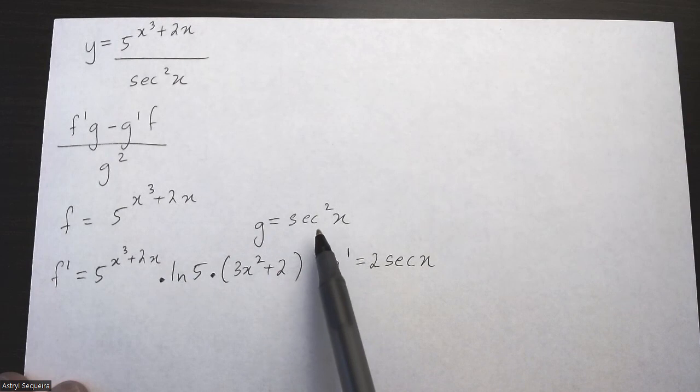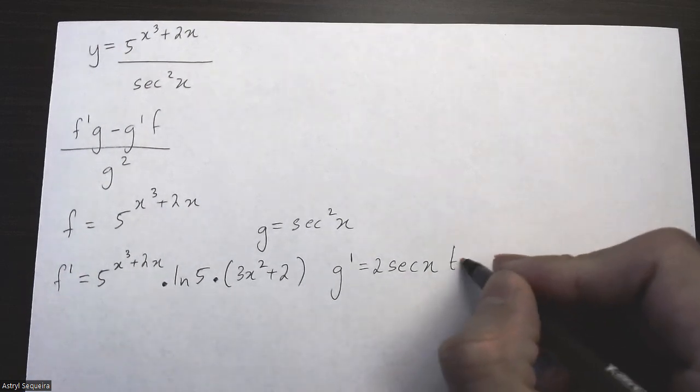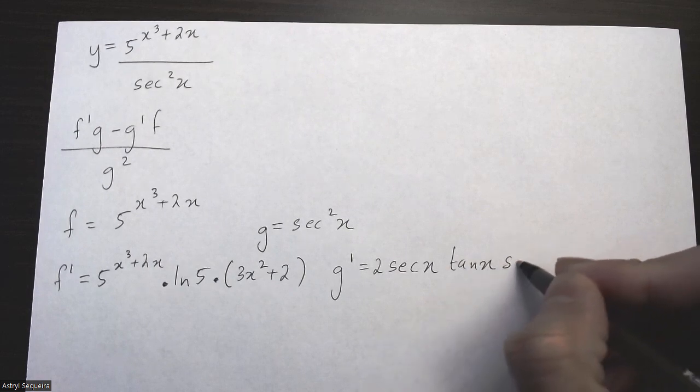According to the chain rule, I multiply by the derivation of sec x, which is tan x sec x.